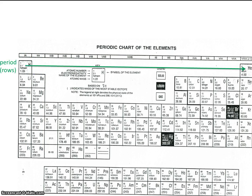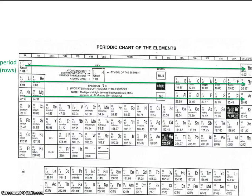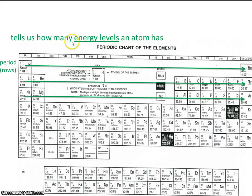Now the periods, or rows, go left to right across the periodic table. The periods, or rows, tell us how many energy levels an atom has. You don't need to know that now, but I just want to have this in the video so it's something you've seen at least. The periods are numbered 1, 2, 3, 4, 5, 6, and 7.